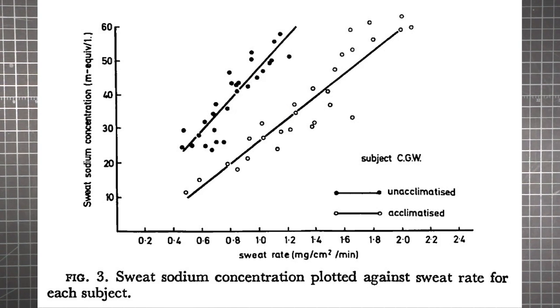For any given person, whether acclimatized or not, as your sweat rate increases, your sweat gets saltier and saltier. For a fluid loss rate of 1.0, for instance, you get a sodium concentration of about 27. If you double the fluid loss to 2.0, the saltiness of that sweat more than doubles to around 60.